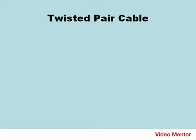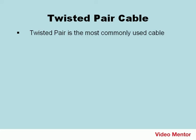Let's start by talking about twisted pair cable. The most common type of cable used in today's networks is twisted pair, and the most frequently used twisted pair types are Category 5, Category 5E, and 6.